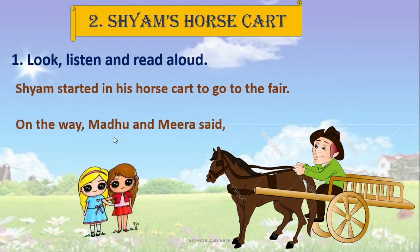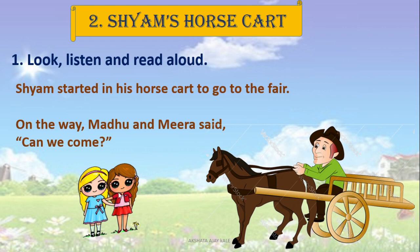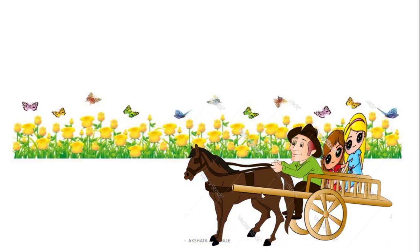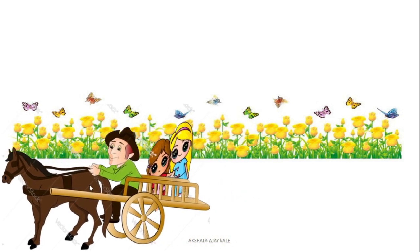On the way, Madhu and Meera said — two girls, Madhu and Meera — they came in front of the horse cart and said, 'Can we come?' They asked Shams, 'Can we come?' Oh yes, said Shams — you can come with me. So Madhu, Meera and Shams together moved to the fair on his horse cart.